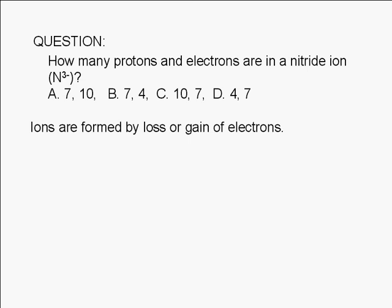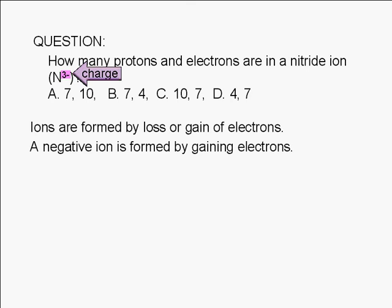Ions are formed by the loss or gain of electrons. The number you see written on the upper right hand corner is the charge of the ion. Remember that each electron has a negative 1 charge. A negative charge is obtained by gaining electrons. Therefore, a negative ion must have more electrons than protons.